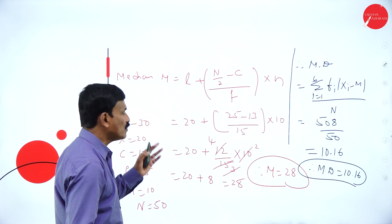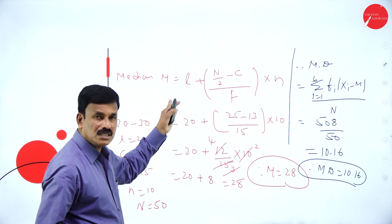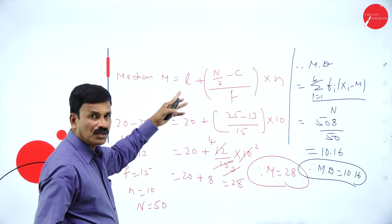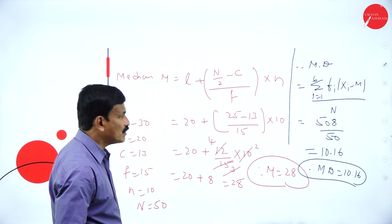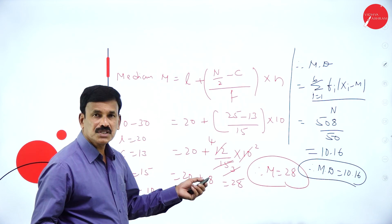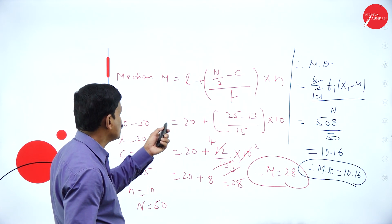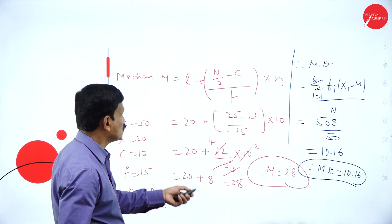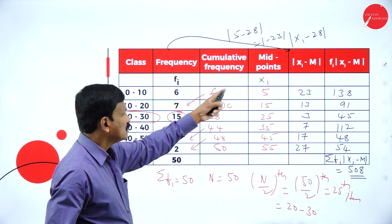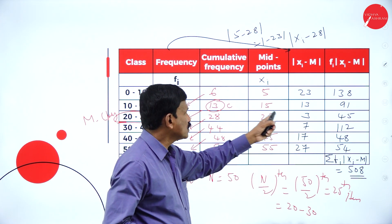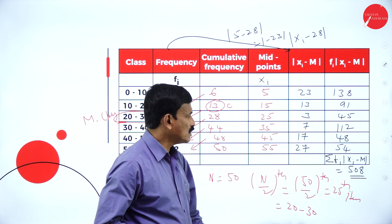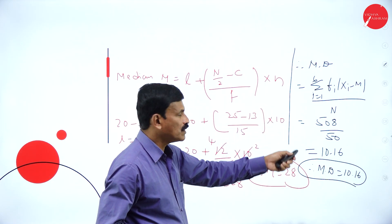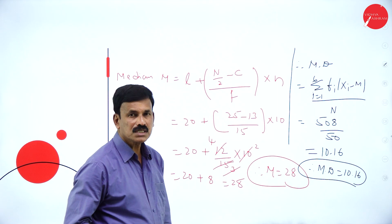The formula is very important: to find the median use L plus N by 2 minus C divided by F into H, where L is the lower class interval, N is sigma Fi, C is the cumulative frequency, F is the frequency, and H is the interval difference. Substituting gives M equal to 28. Then subtract each Xi from M, multiply by Fi to get sigma Fi mod Xi minus M, and substitute in the formula: mean deviation equals 508 by 50, that is equal to 10.16.